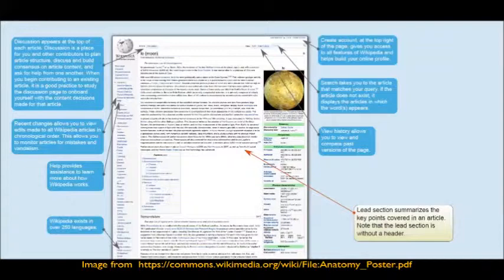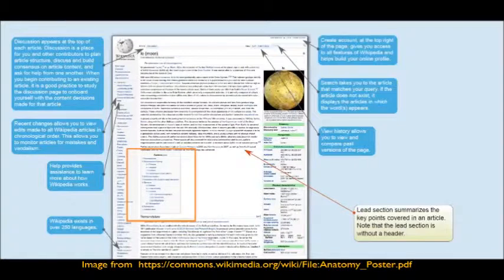To break it down a little bit more, the lead section summarizes all of the key points in your article. The very first sentence should define the topic the article is about — that's really where you summarize the information. The info box is just the box that gives you an idea of what's contained in the article. It's not something that will appear on any article; there is some code you can grab for that — just check out another Wikipedia page for how to grab that code.